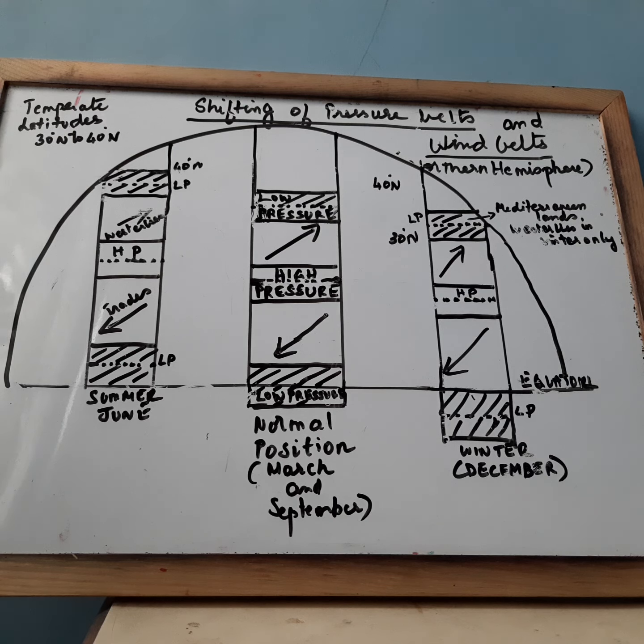Due to the earth's inclination, the sun is overhead at midday in different parts of the earth at different seasons. The entire system of pressure and wind belts follow the movement of midday sun.